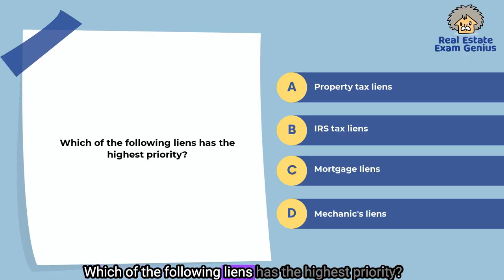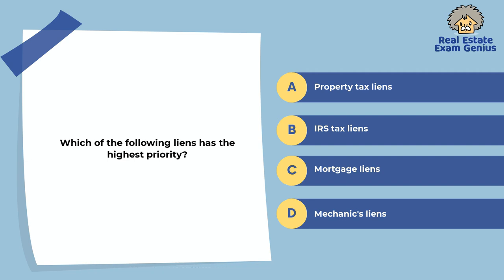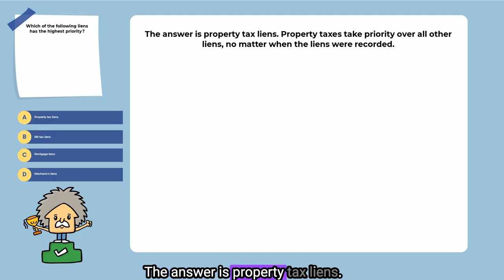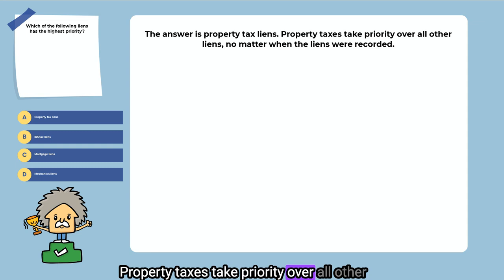Which of the following liens has the highest priority? Property tax liens or IRS tax liens. The answer is property tax liens. Property taxes take priority over all other liens, no matter when the liens were recorded.